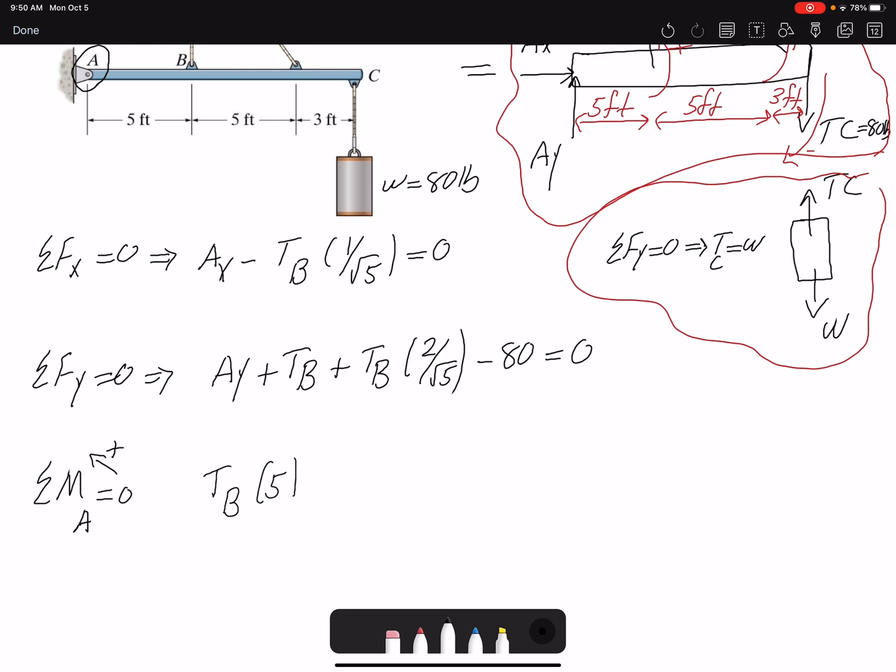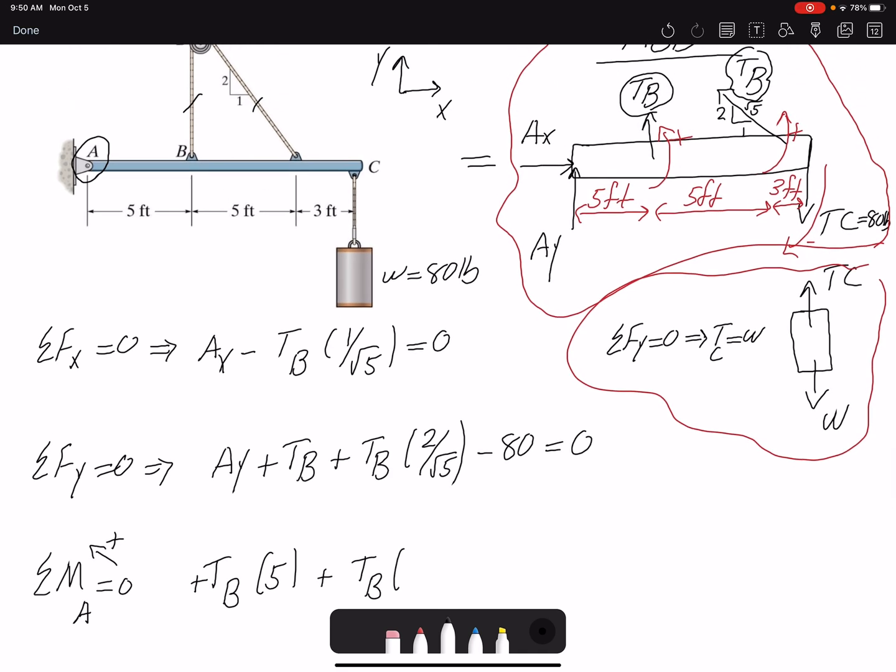Let's write this: TB moment arm is 5, that was a positive moment. Also TB, only the vertical component is going to create a moment. The horizontal component is not going to create any moment because it's going through point A, and we are neglecting the thickness of our beam. So only the vertical component...